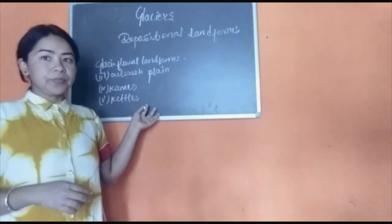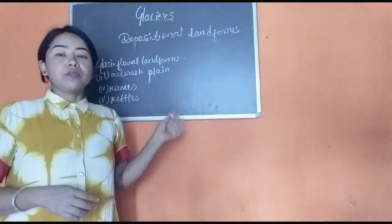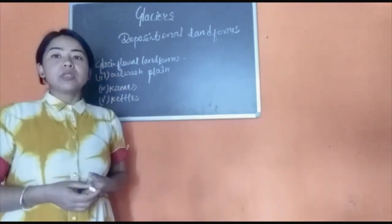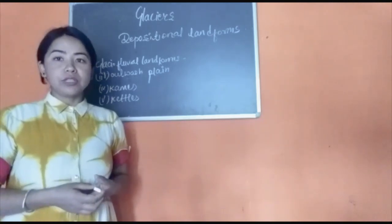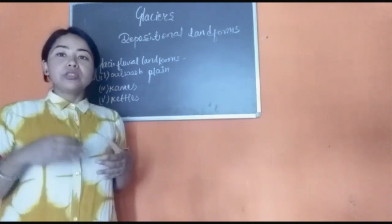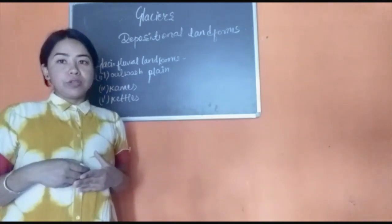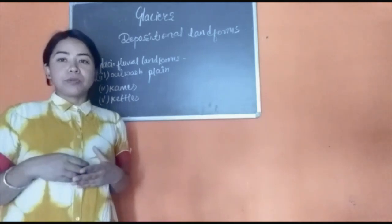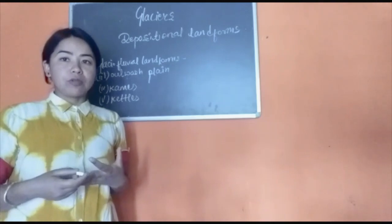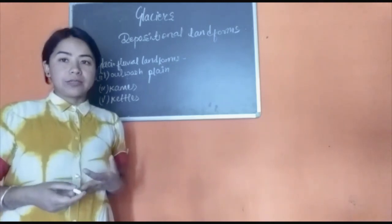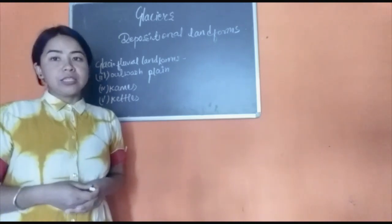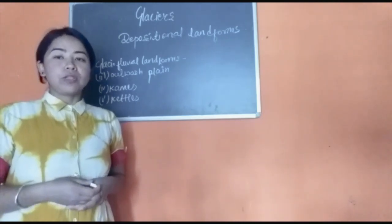With this we have completed the work of glaciers. We learned about various depositional and erosional features formed by glaciers. Glaciers erode the slopes, so most erosional features are located at the slopes, and they do the work of deposition in the lowlands, so most depositional landforms are found in the lowlands. I hope you will all try to learn and understand at least a few of these landforms.